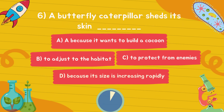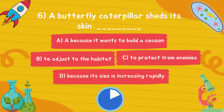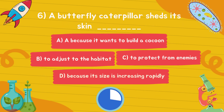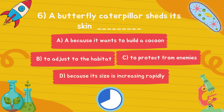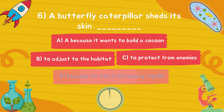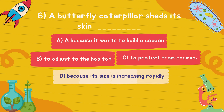A butterfly caterpillar sheds its skin dash. Answer is option D, because its size is increasing rapidly.